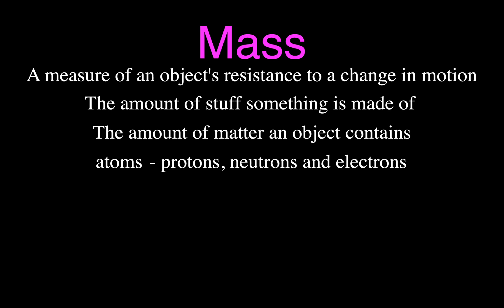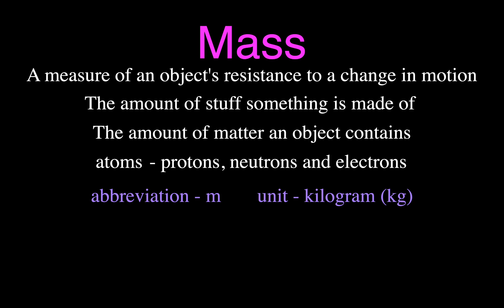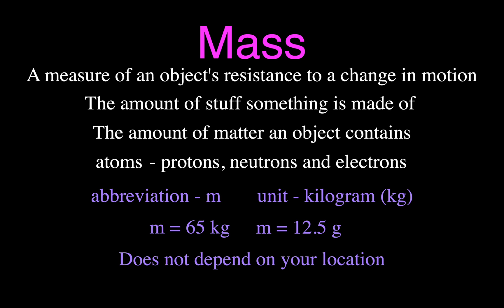Basically, if you have more mass — a higher mass — that means you have more matter, and you're made of more protons, neutrons, and electrons. Mass is really a measure of the amount of matter you're made of, and also an object's resistance to a change in motion, because the more massive something is, the harder it is to change its motion. Mass has the abbreviation M. The base unit in the metric system for mass is the kilogram, not the gram, although we often use grams — for example, 12.5 grams or 65 kilograms.